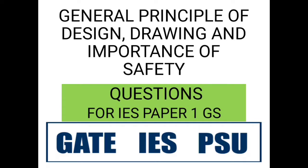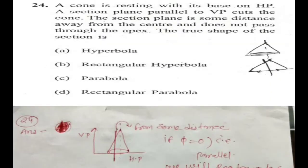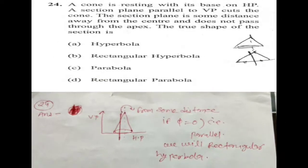Here we will discuss some questions from our topics. I have already given all modules. Now we will discuss some questions from IS paper 1, given in last year. A cone is resting with its base on a horizontal plane; a section plane parallel to VP cuts the cone, and the section plane is some distance away from the center.